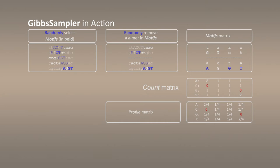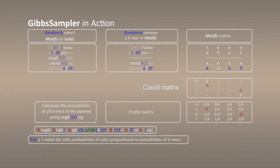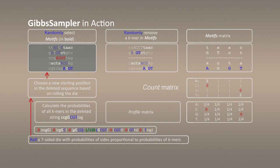After we construct the profile matrix, we calculate the probability of all k-mers in the deleted string. Afterwards, we roll a seven-sided dice loaded with probabilities proportional to those we computed. After we toss this dice, we choose the new starting position of the motif — this is the new substituted position in the deleted sequence. That's how it works.